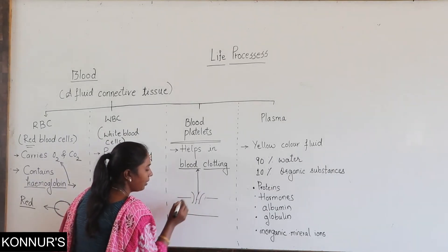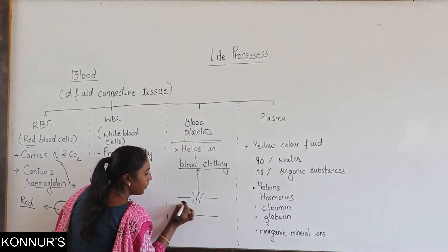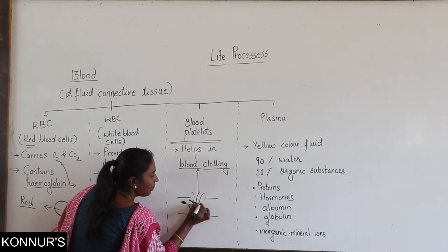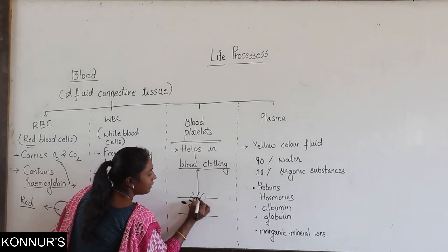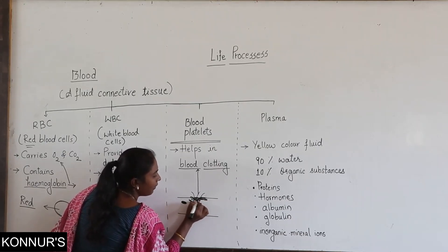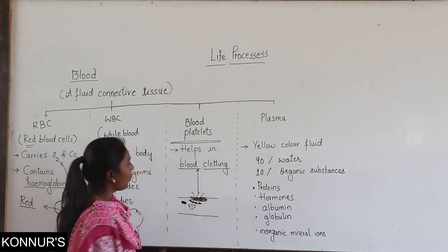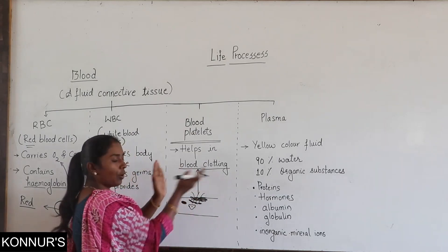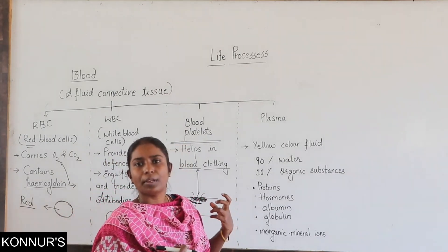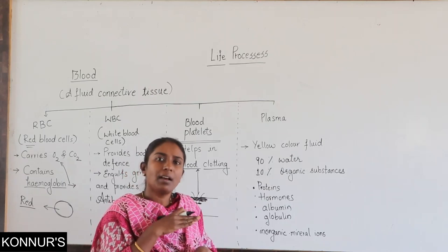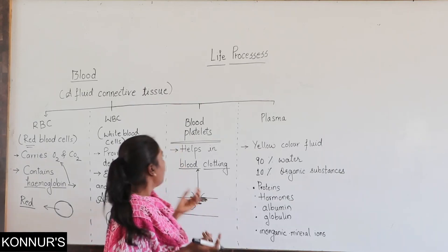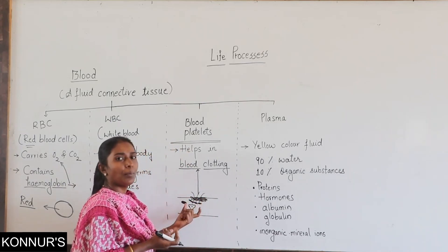How does this blood clotting take place? When the blood is oozing out, blood consists of RBC, WBC, and platelets. These platelets get accumulated at the area where the blood is oozing out and form a thick net-like structure. This thick coating is called blood clotting, because of which the blood does not come out of the body. Just imagine if blood platelets were not there — the blood would just ooze out until you got medical aid. So blood platelets are one of the most important components in our body.